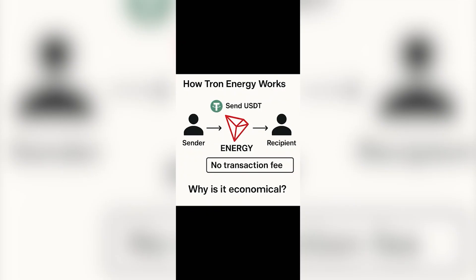Now let's quickly break down how this actually works and why it saves you money. On the Tron network, every time you send USDT, the network requires resources — mainly energy and bandwidth. If your wallet doesn't have enough energy, Tron burns your TRX to pay for the transaction. Most users don't even notice this — they just lose TRX on every transfer. But there's a smarter way: instead of burning TRX over and over again, you can rent energy once and use it for multiple transactions.